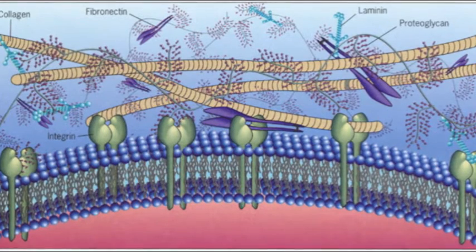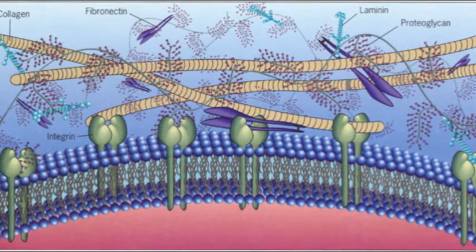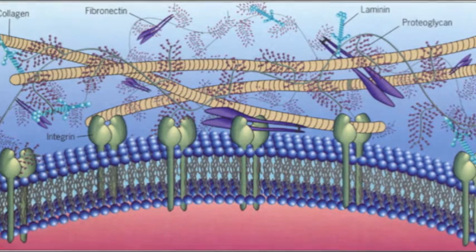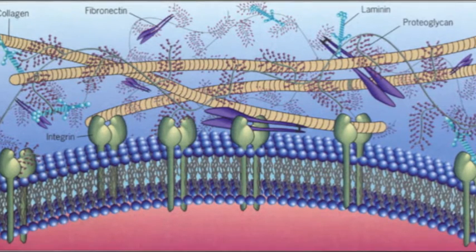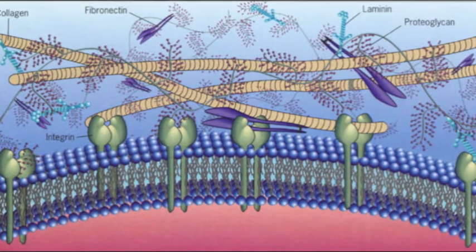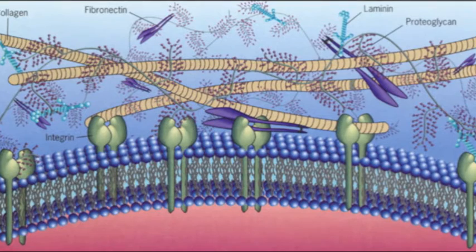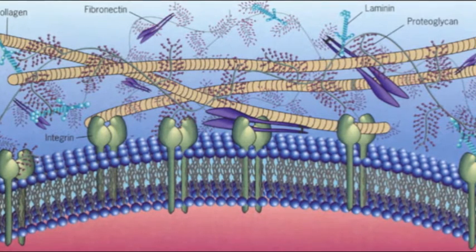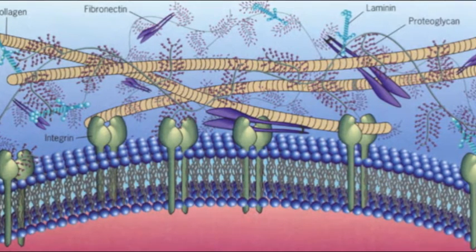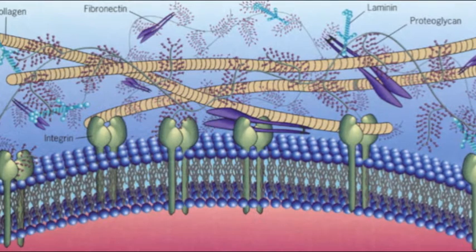The extracellular matrix functions to support, adhere, help move, and help regulate many things in the cell. Collections of ECM secreted by the cell provide structural and biochemical support to the surrounding cells.